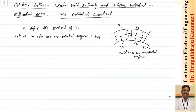In order to define the potential gradient, let us consider two equipotential surfaces S1 and S2. Let us assume the potential at equipotential surface 1 is V and the potential at equipotential surface 2 is V plus delta V. That means the potential is increasing as you go from surface 1 to surface 2. Let us assume the gap between the surfaces is delta N.